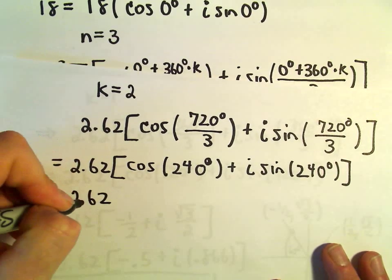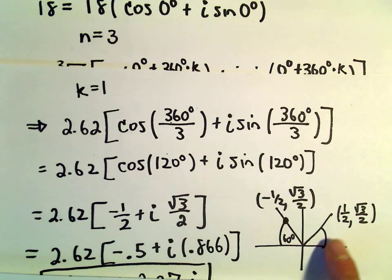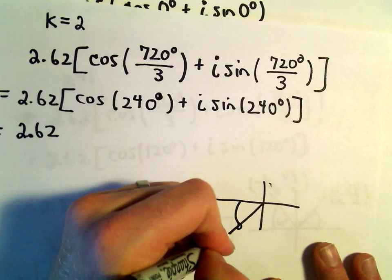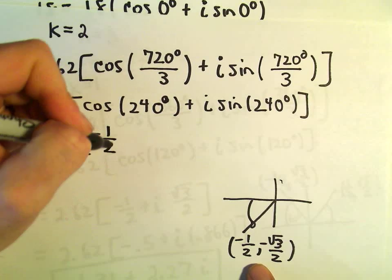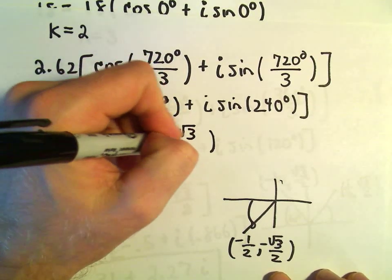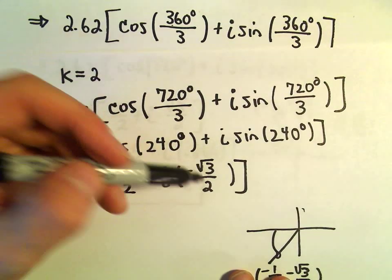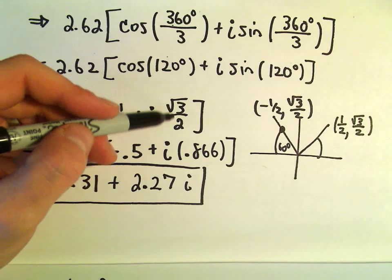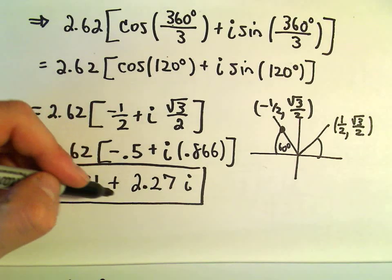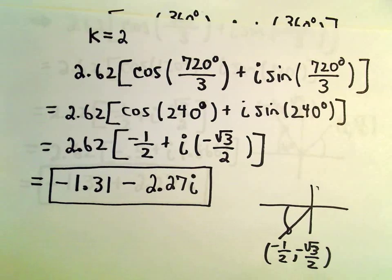For 240 degrees, we're in quadrant 3 with the same reference angle of 60 degrees. So cosine of 240 is negative 1/2 and sine of 240 is negative root 3 over 2. The values are nearly the same as before, except root 3 over 2 is now negative. After simplifying, we get negative 1.31 minus 2.27i. That's our third complex root.